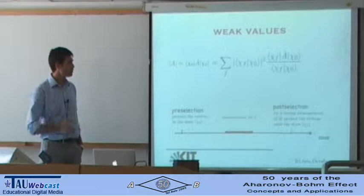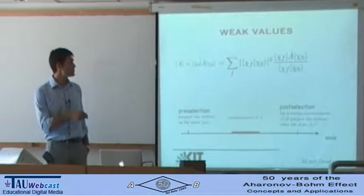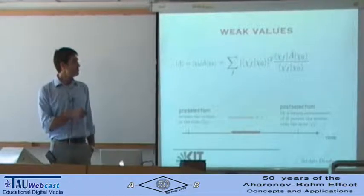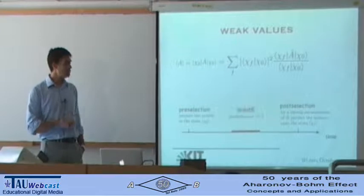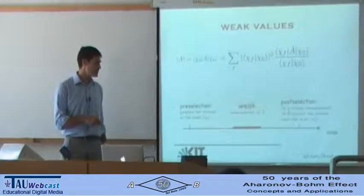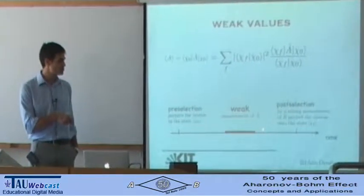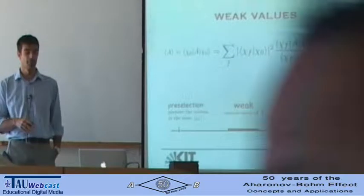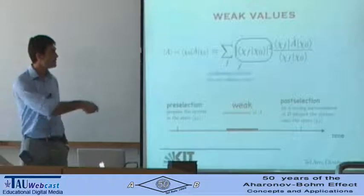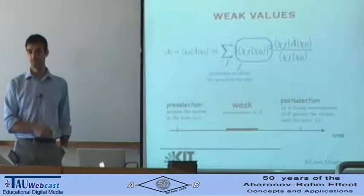Let's try to infer with a simple argument what is the result of this procedure. This is just a mathematical identity — I multiplied and divided by some quantity. If you make a weak measurement, you can assume that the state of your system is not disturbed after the measurement, so after the measurement your system is still in state chi-zero. Looking at this formula, this part is nothing more than the probability to obtain the final state chi-zero.